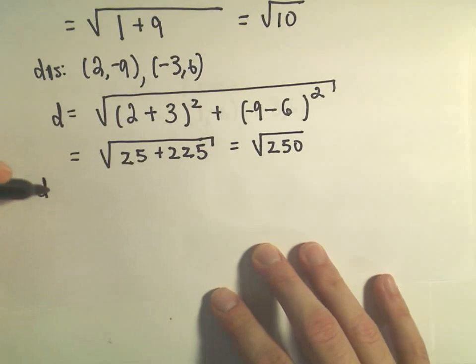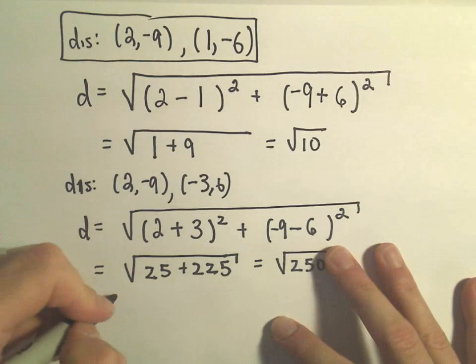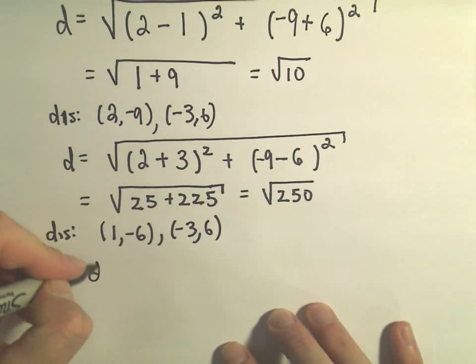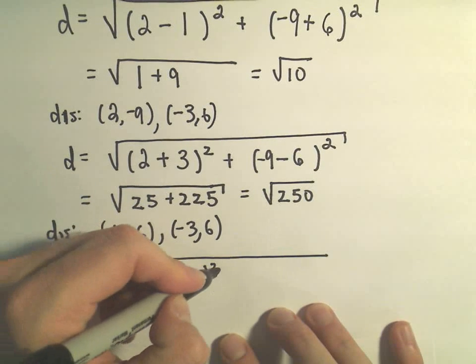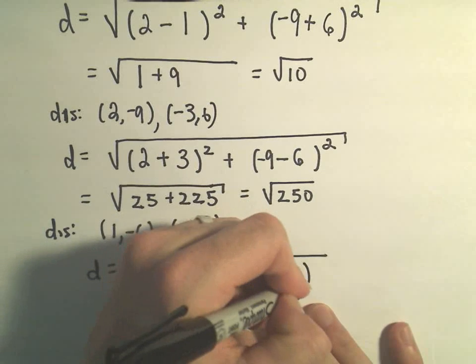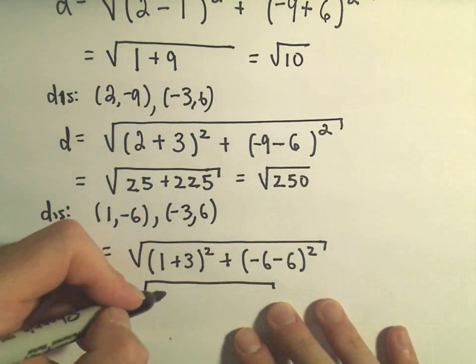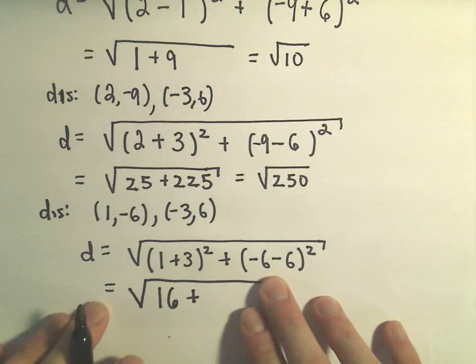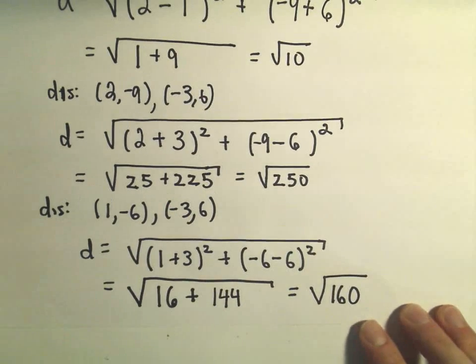So let's do our very last one here. If we look at the distance between (1,-6) and (-3,6), we're just going to have to find the distance. So I can take 1 minus -3, which would make 1 plus 3 squared, plus -6 minus 6 quantity squared. And if we simplify this, we're going to get 1 plus 3 is 4 squared, which is 16. We'll get -6 and -6, which is -12. And -12 squared is positive 144. So if I simplify this, I'm getting the square root of 160.